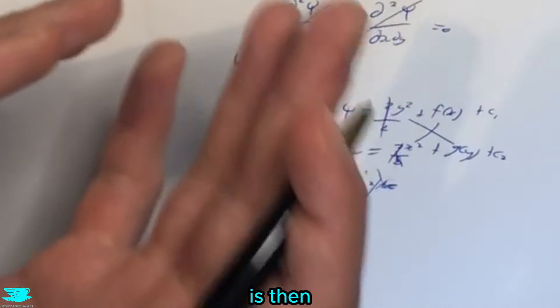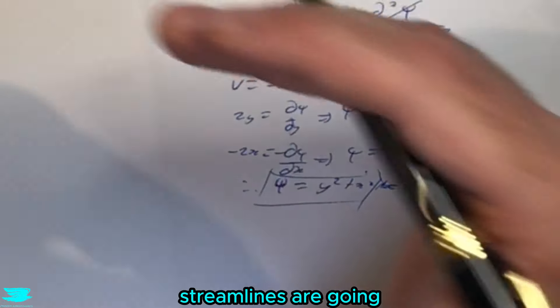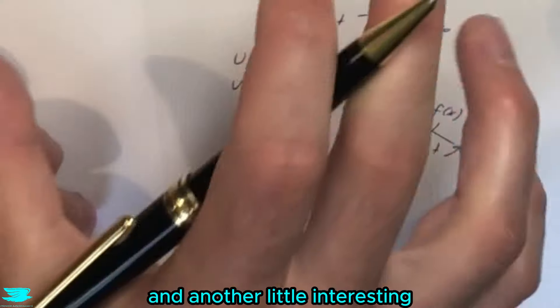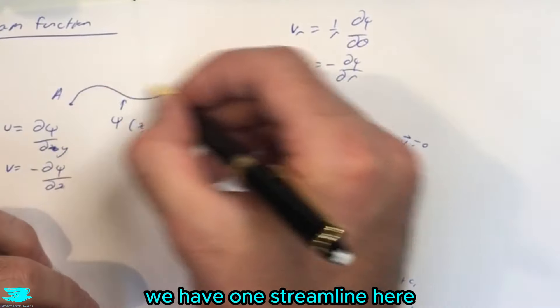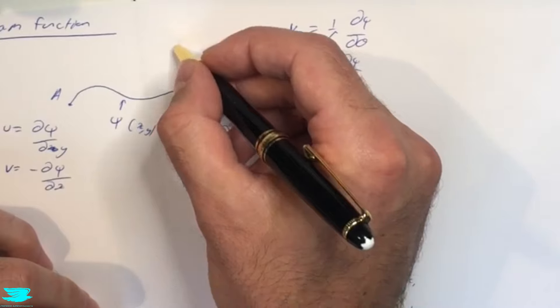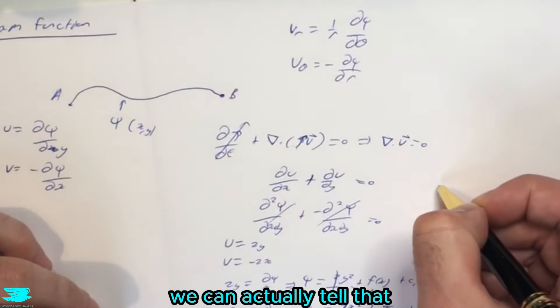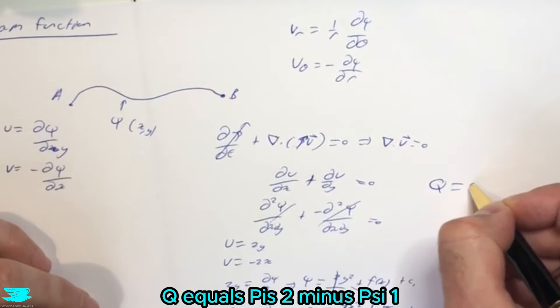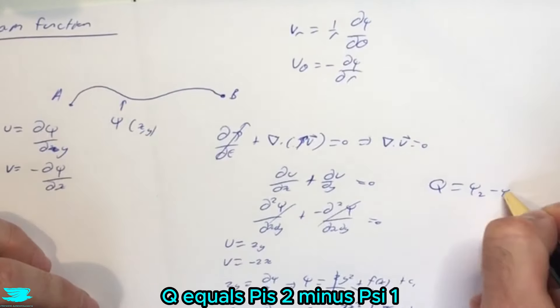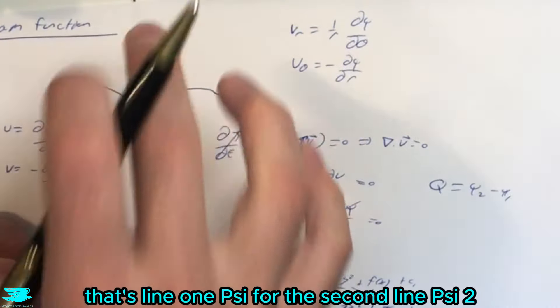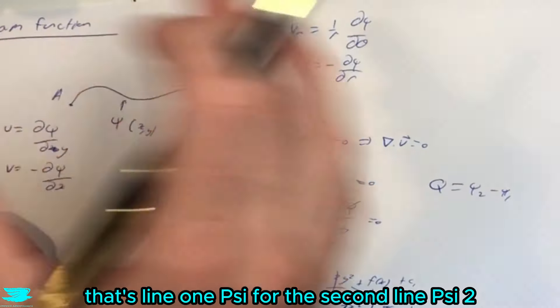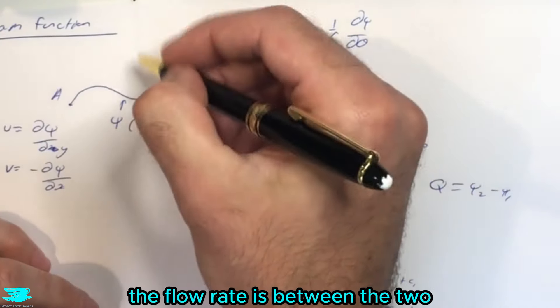So that is how you'd calculate the stream function, and what we'd use it for is to figure out where the streamlines are going. And another little interesting thing we can use it for is if we have two different streamlines, to figure out the mass flow rate between the two, we can actually tell that with q equals psi 2 minus psi 1. So if we know what psi is for one line and psi for the second line, we can figure out what the flow rate is between the two.